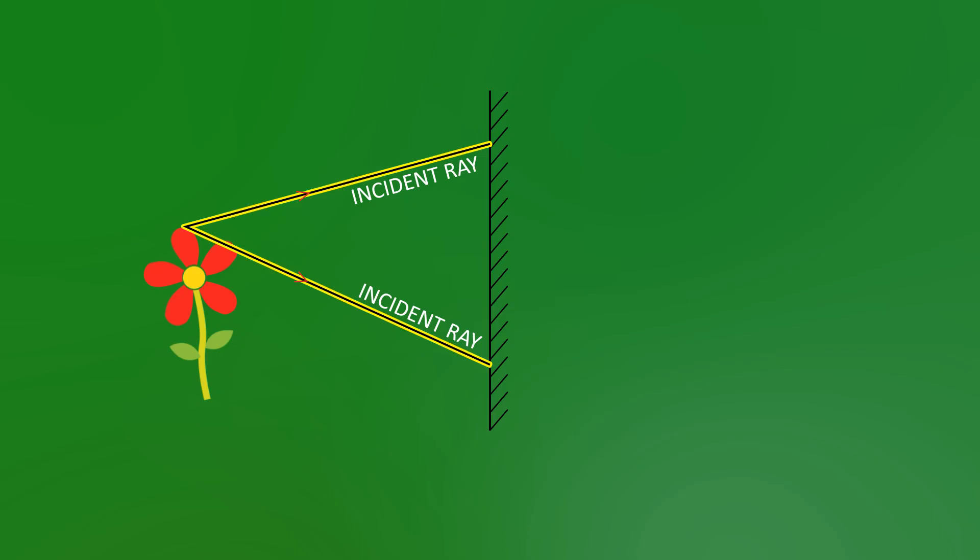Both these rays are called incident rays, as they are incident on the mirror. Ok, now for our first rule. Whenever a light ray hits a surface, we must draw a normal. This is a dotted line at 90 degrees to the surface where the light ray hits.